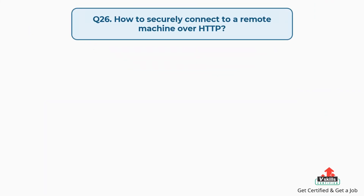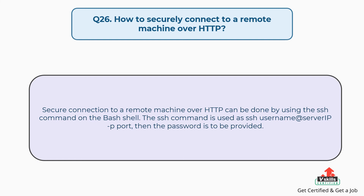Question number twenty-six: how to securely connect to a remote machine over HTTP? A secure connection to a remote machine over HTTP can be done by using the SSH command on the bash shell. The SSH command is used as: ssh username@server_IP port, then the password is to be provided.